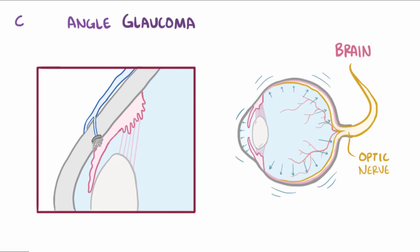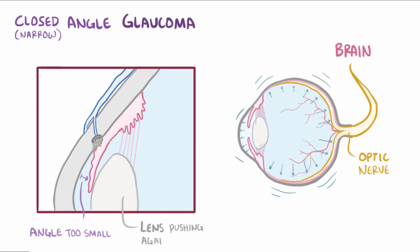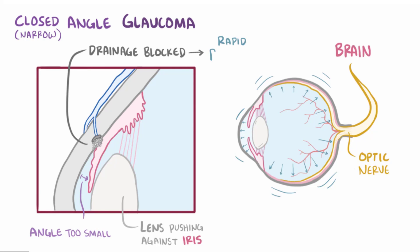Another type is closed angle glaucoma, also known as angle closure glaucoma or narrow angle glaucoma. This is due to the angle between the iris and the cornea being too small, meaning the passageway for aqueous humor outflow is too narrow as a result of the lens being pushed against the iris. The drainage system gets blocked, causing a rapid buildup of pressure within the eye.